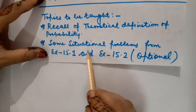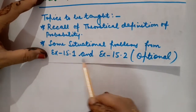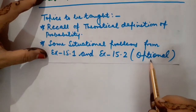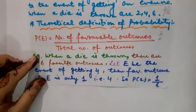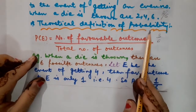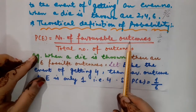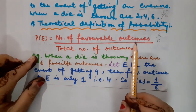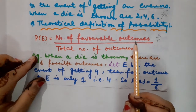Now I am going to continue with the recall of the theoretical definition of probability — that is nothing but the formula to calculate the probability of an event. Along with it, I will be proceeding further with some situational problems from exercises 15.1 and 15.2, which contain important questions. This is the content I am going to cover in today's Lecture 3.